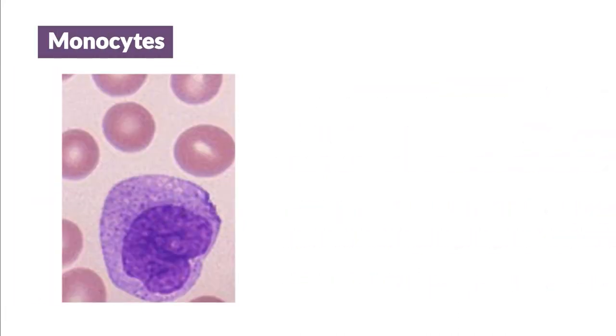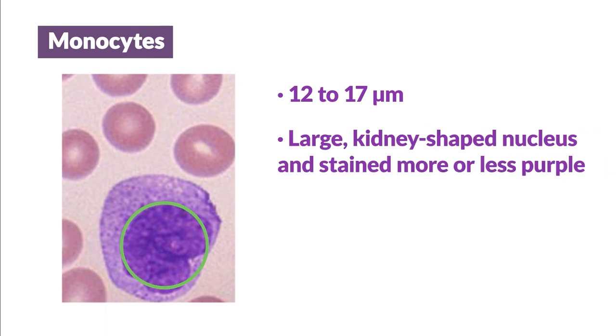Monocytes. Monocytes are the largest leukocytes. They have a diameter ranging from 12 to 17 micrometers. Monocytes have a large kidney-shaped nucleus that is stained more or less purple.